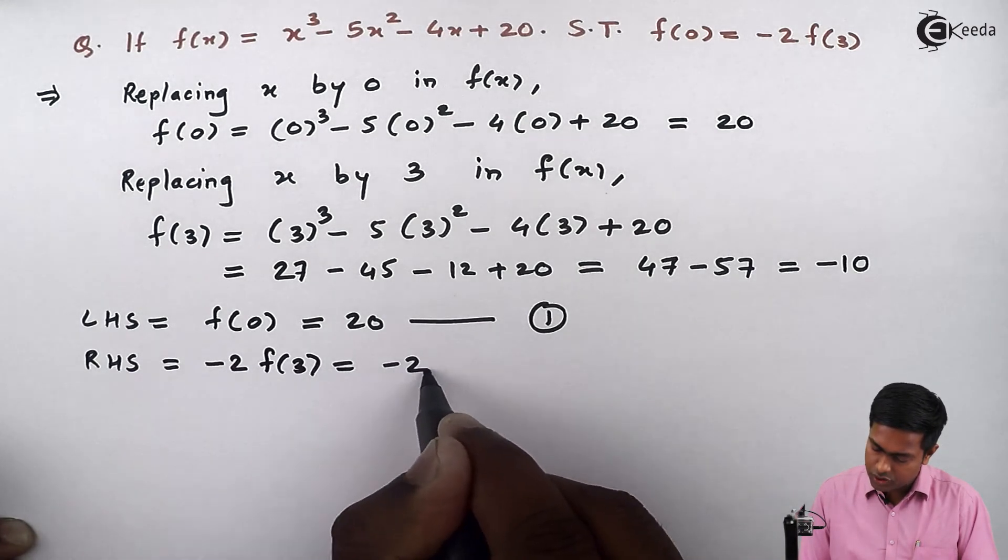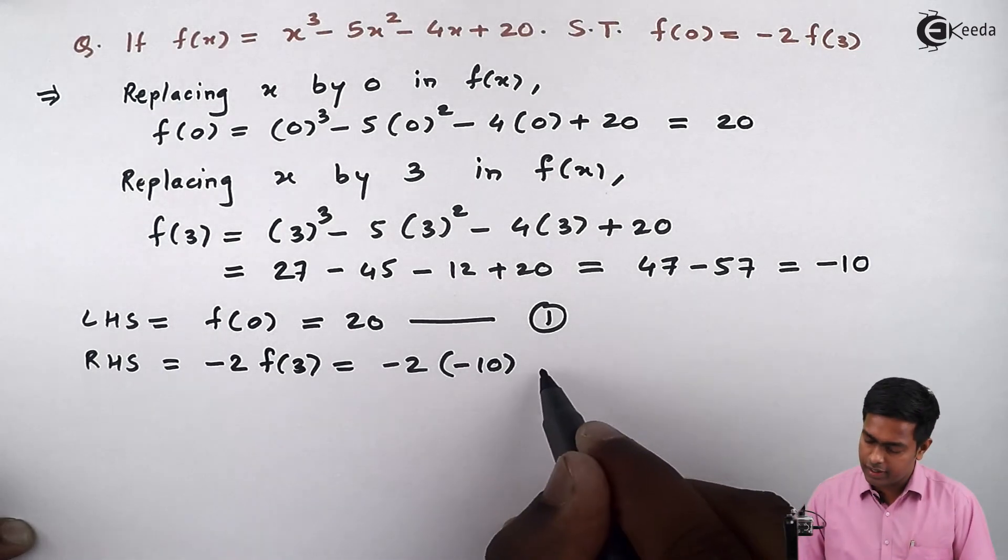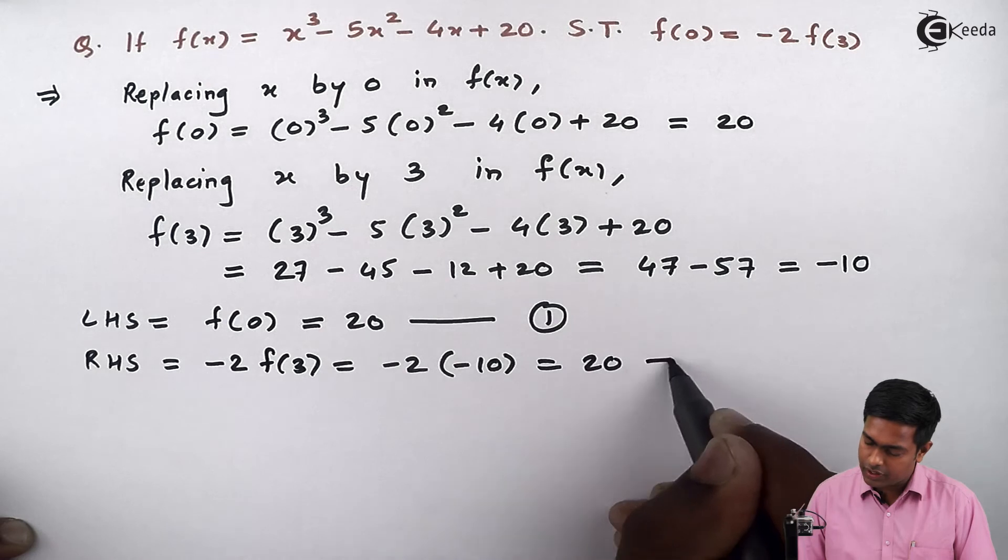And our RHS is -2 times f(3). So that is -2 times -10. So when we multiply this we will get positive 20 which is equation number 2.